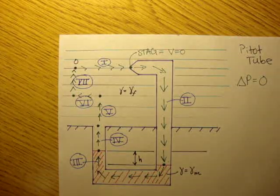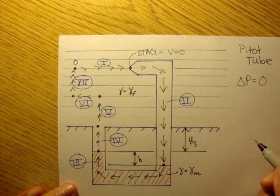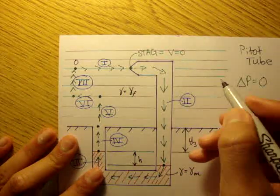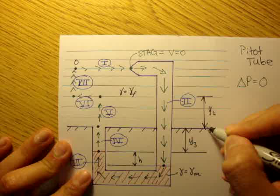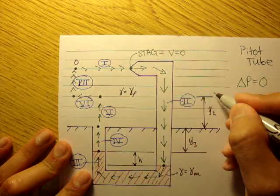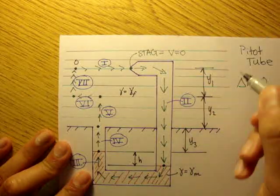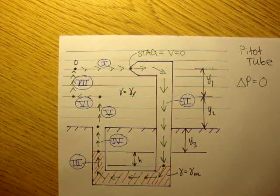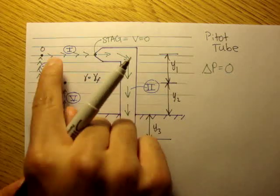Let's define a few more dimensions. This distance — path 4 — we'll call y3. This distance from ground level to where we change directions, we'll call y2. And from that point up to the stagnation point, we'll call y1. So from this distance up to 0.0, or path 1, that's y1.